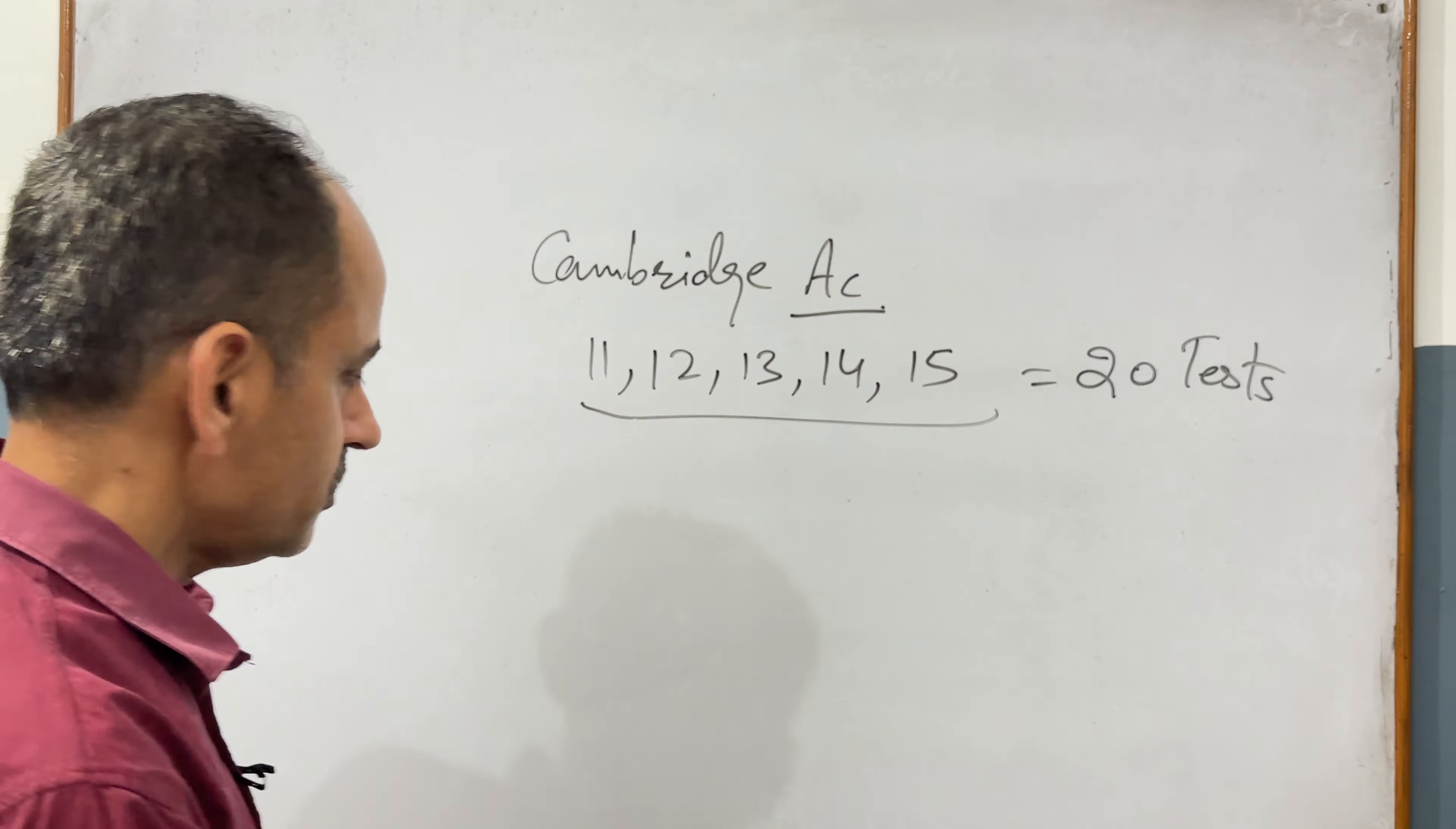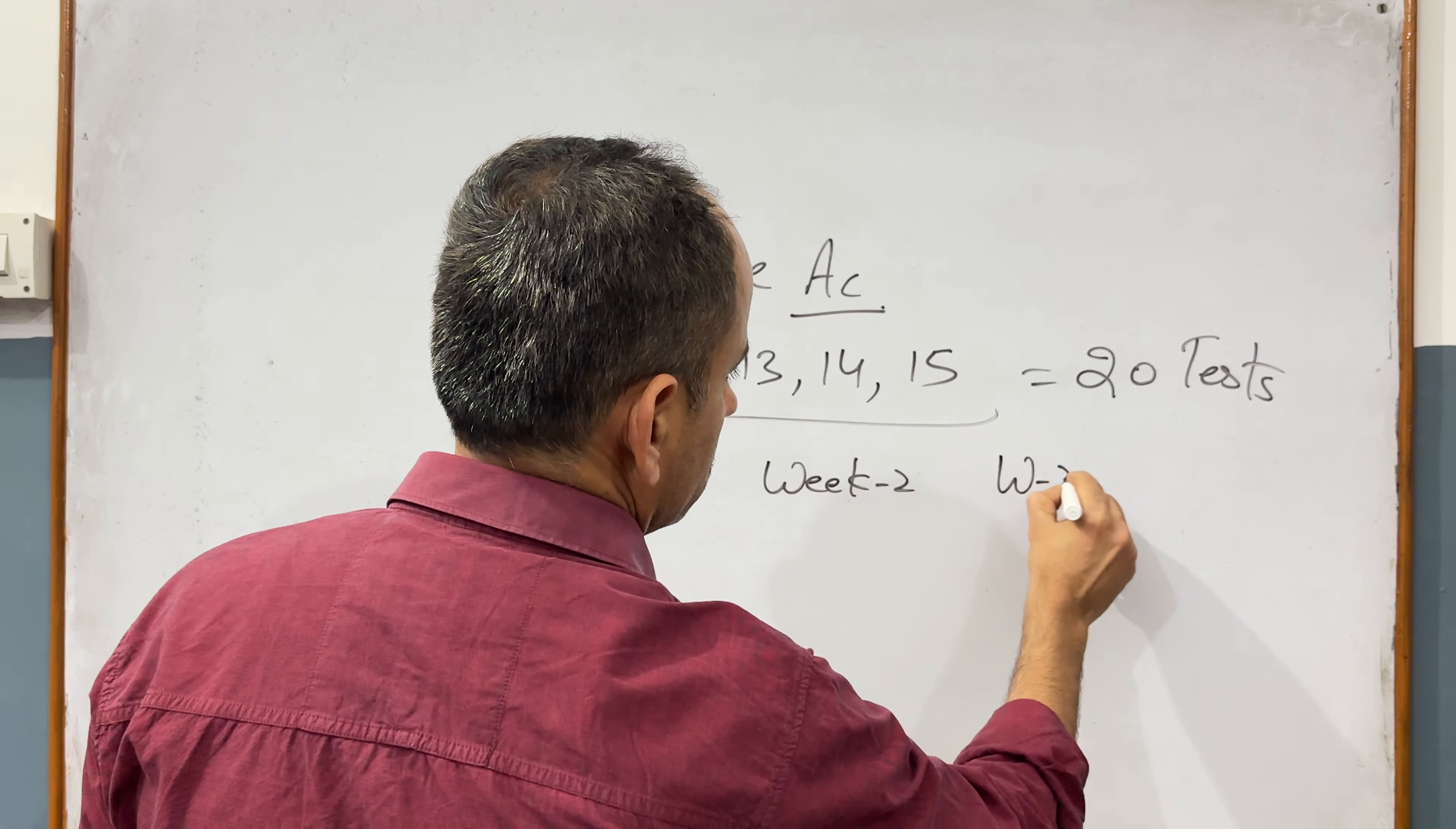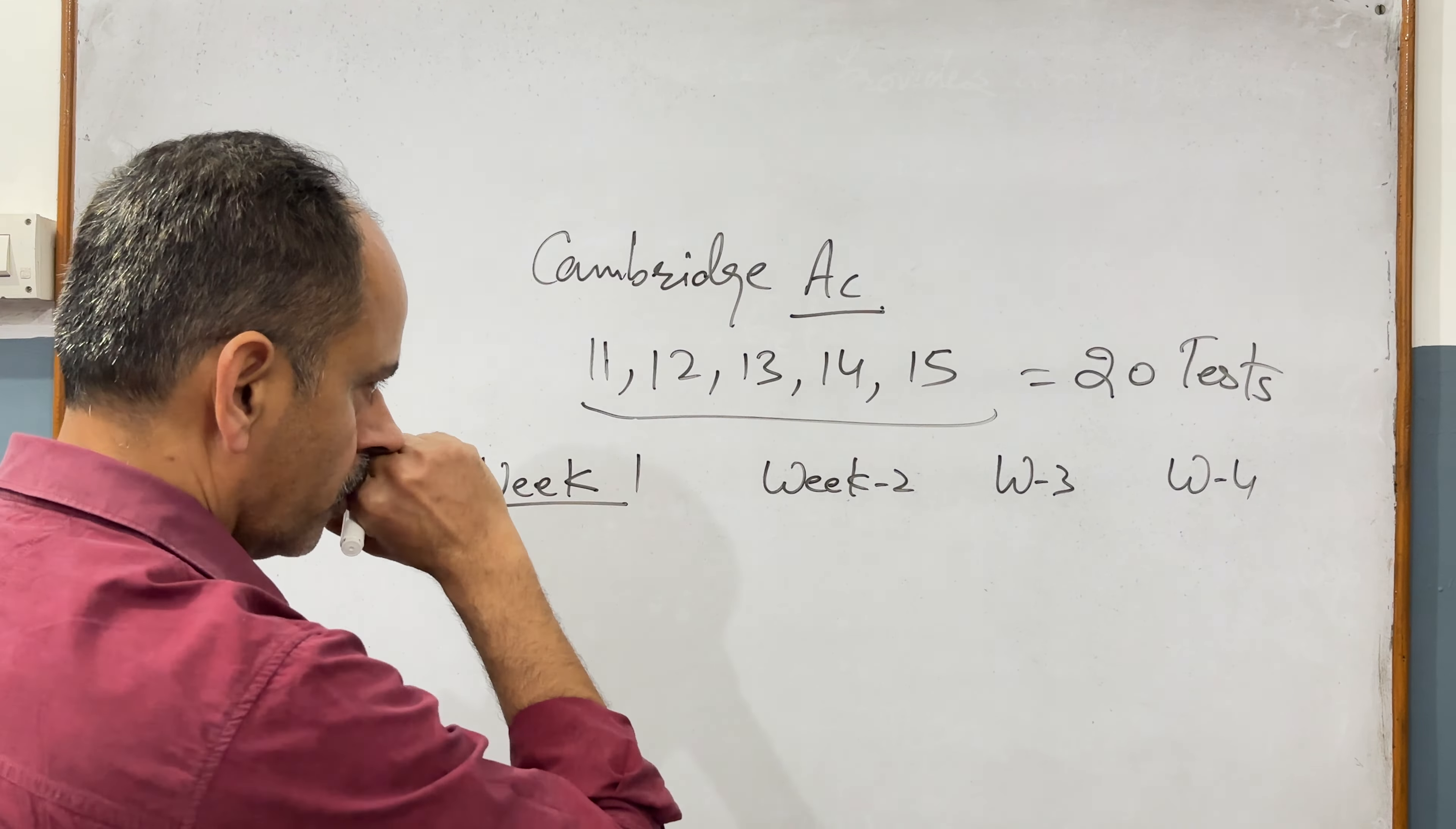What you have to do is divide your practice into weeks - week one, week second, week third, and week fourth. In first week, you have seven days. Let's take the example of book number 11. You will start your practice from book 11 and do three passages: test one passage one, test two passage one, test three passage one. You will do three passages in one day, the first passage of each of the first three tests.